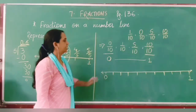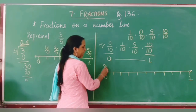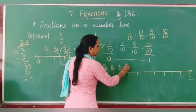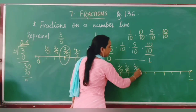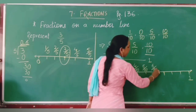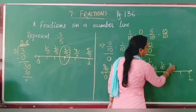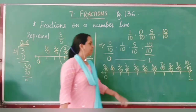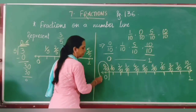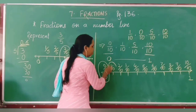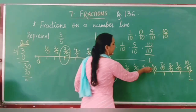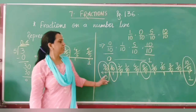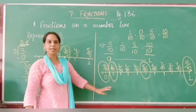Label the 10 parts: 0 upon 10 at the start, then 1 upon 10, 2 upon 10, 3 upon 10, 4 upon 10, 5 upon 10, 6 upon 10, 7 upon 10, 8 upon 10, 9 upon 10, and finally 10 upon 10, which is whole number 1. Now find and mark where each given fraction lies: 0 upon 10 is at the start, 1 upon 10 is next to zero, 5 upon 10 is in the middle, and 10 upon 10 is at whole number 1. This is how you represent fractions on the number line.